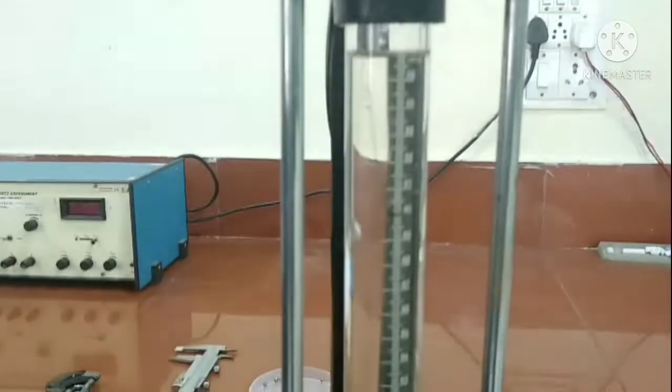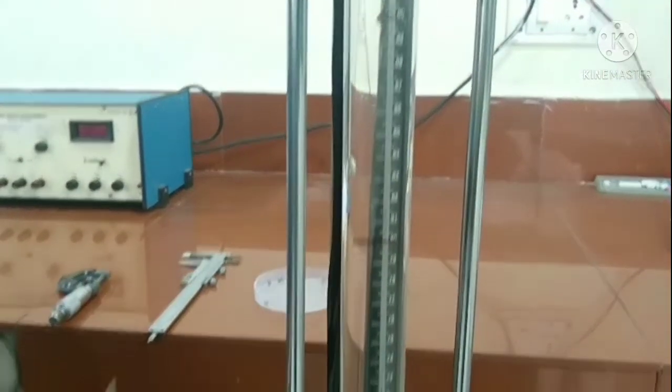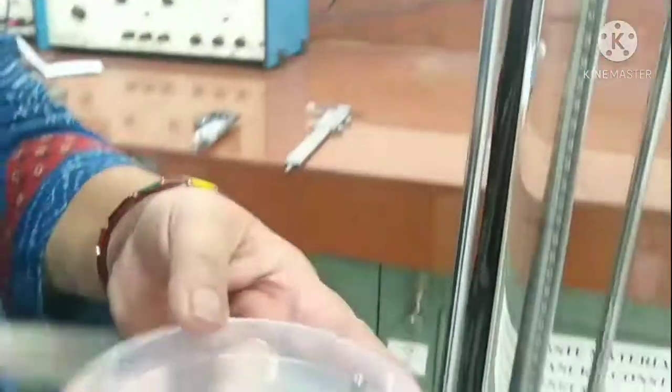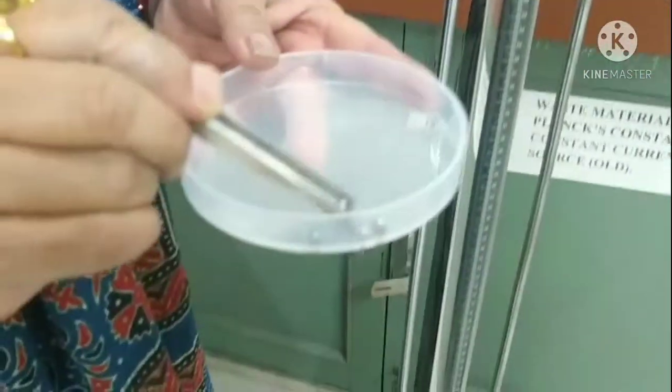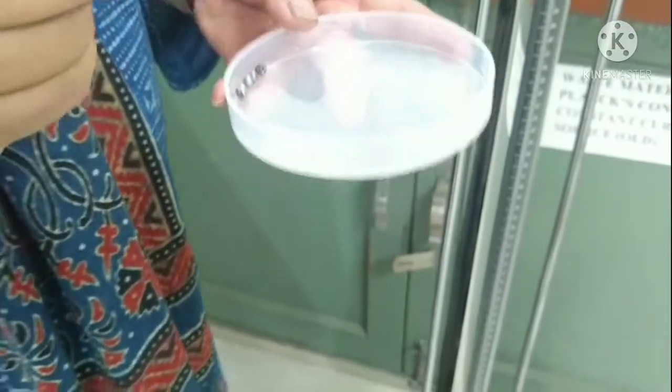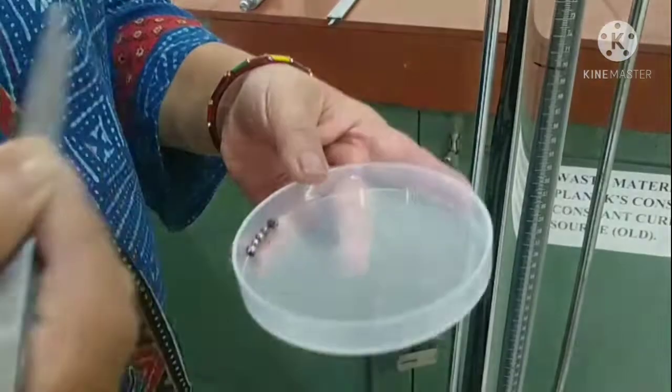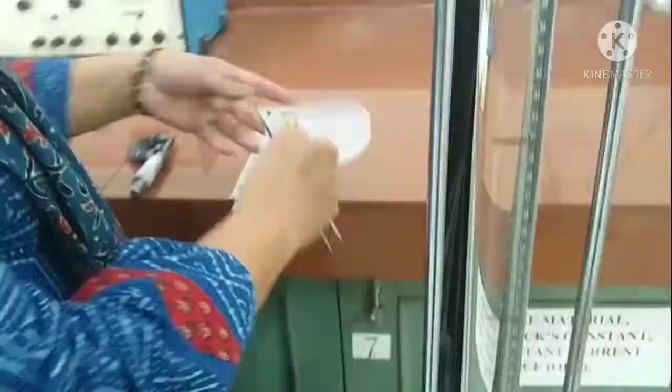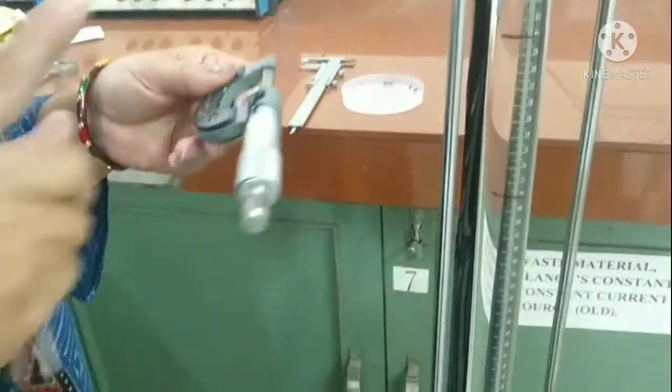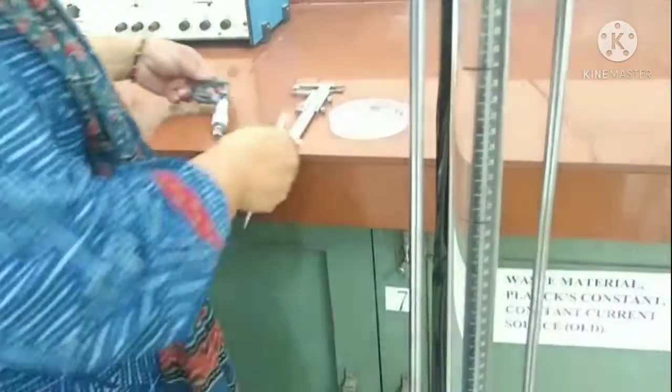After that, to perform our experiment, we will require spherical balls. To minimize the error, we have taken the balls of three sizes and three balls of each size. The radius of the balls will be measured with the help of a screw gauge which will be explained in a separate video.